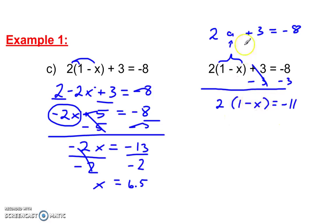Now, if this was an a, I would divide by the 2. So, divide by 2 because this is a multiplication. Divide by 2. Then, I'm left with 1 minus x is equal to negative 5.5.